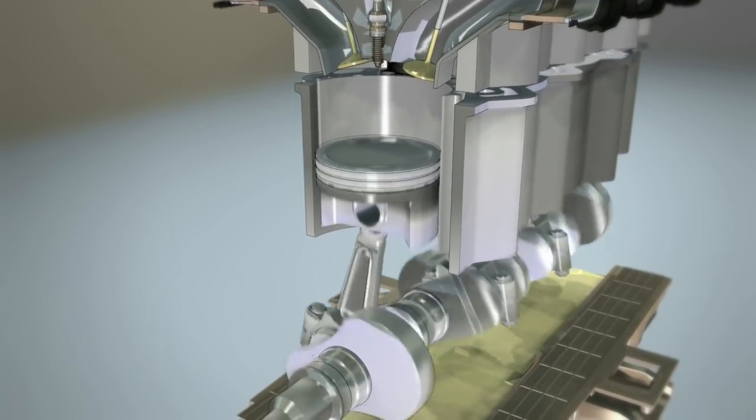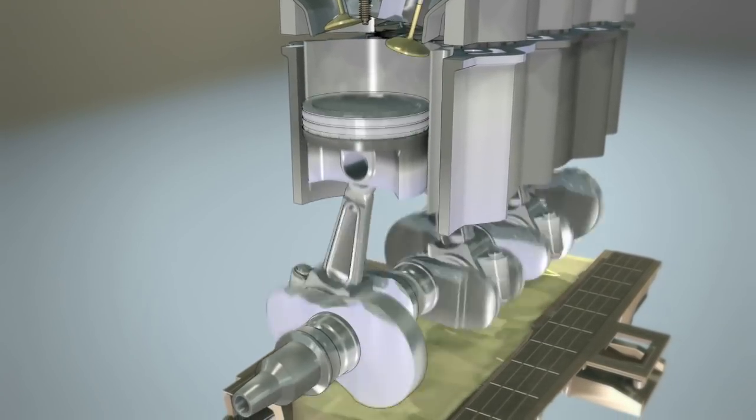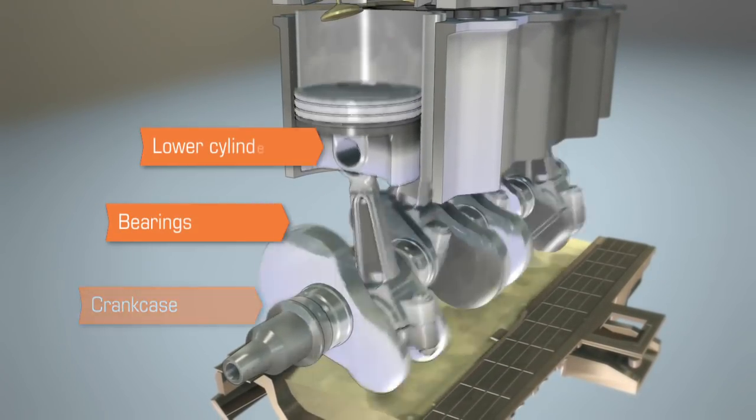Motor oil is designed to reduce friction. It lubricates many parts of an engine, including the crankcase, bearings, and lower part of the cylinder.